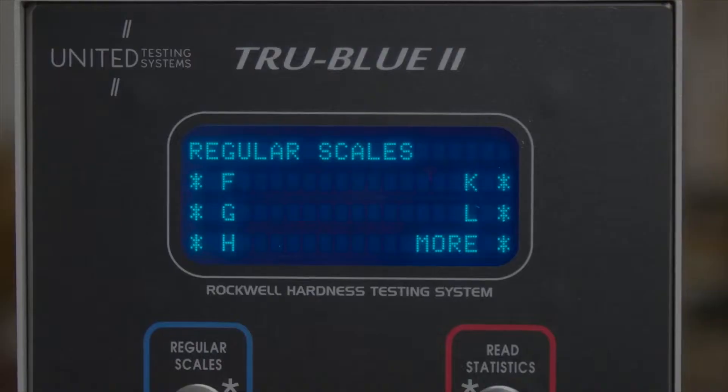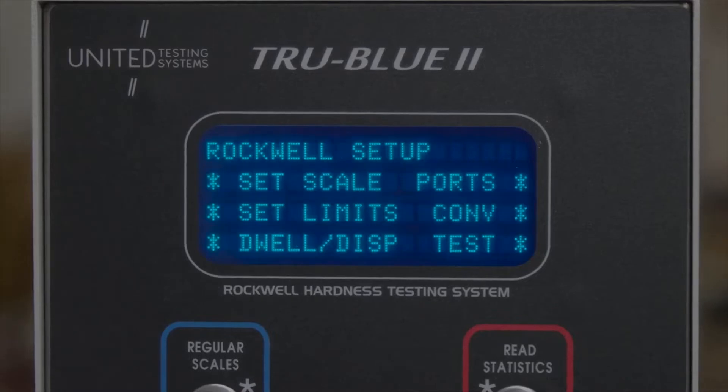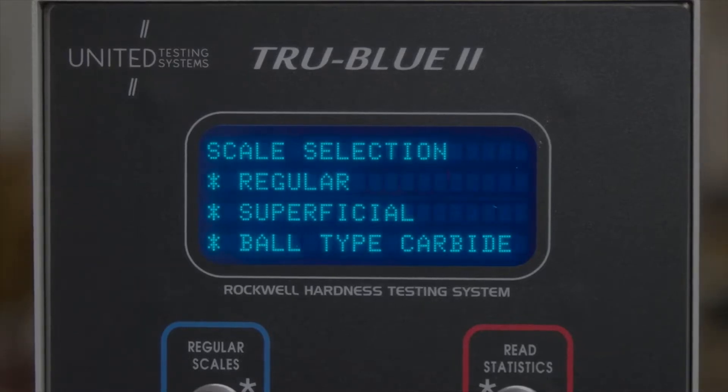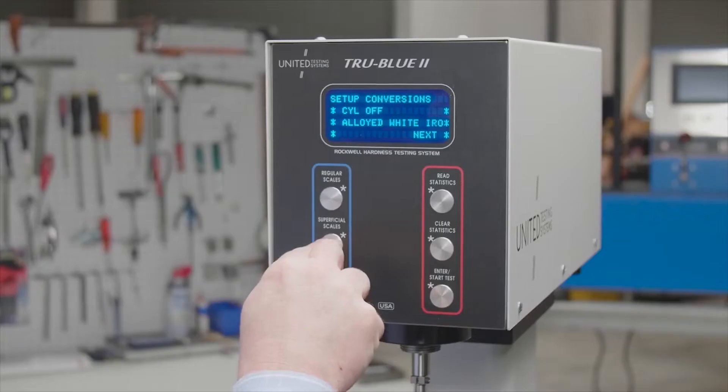The True Blue 2 meets all NIST, ISO, CE, and ASTM requirements including ASTM E18 and ISO 6508 and can be found in many NADCAP-approved facilities, which is critical for our partners in the aerospace industry.